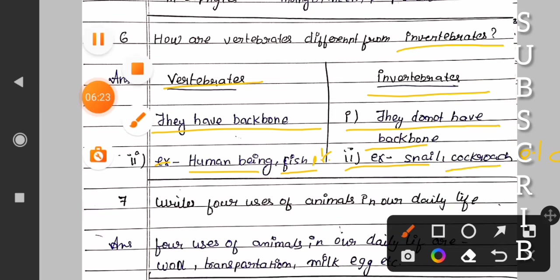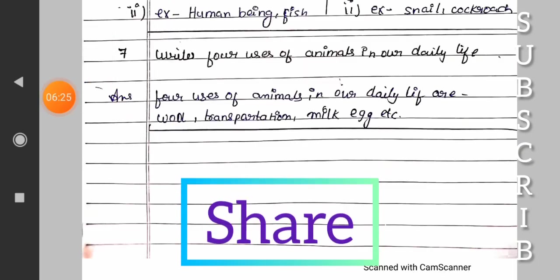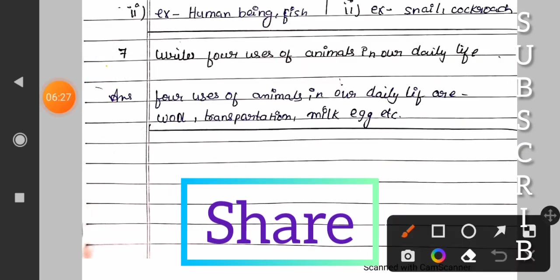And the last question, Question number seven: Write four uses of animals in our daily life. Answer: Four uses of animals in our daily life are wool, transportation, milk, egg, etc.